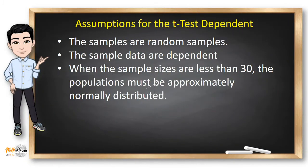Before performing the t-test dependent, you need to make sure that the samples are randomly selected. Second, the sample data are dependent. And when the sample sizes are less than 30, the populations must be approximately normally distributed.